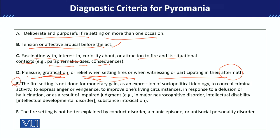Lekin E criteria hai jo bahut important hai aur jise clearly samajhna chahiye: Pyromania kabhii bhi momentary gains ke liye nahi hoga, socio-political ideology ke liye nahi hoga — jaise aap ne aksar dekha hoga ke jab log protest karte hai toh sometime fire setting karte hai, yeh woh nahi hai. Phir woh conceal criminal activity ke liye nahi hoga — koi criminal activity ke baad aap record jala de, aisa nahi hoga. Nahi woh apna anger kisii ki taraf express karne ke liye is tarhan karega, nahi woh apne living circumstances improve karne ki koshish karega — for example agar main apni shop ko aag laga deta hoon to mujhe uski insurance ka rakam mil jayegi aur uski wajah se mere living circumstances improve ho jayenge, aisa nahi hoga. Isi tarhan delusion aur hallucinations ki wajah se woh aisa nahi karega.